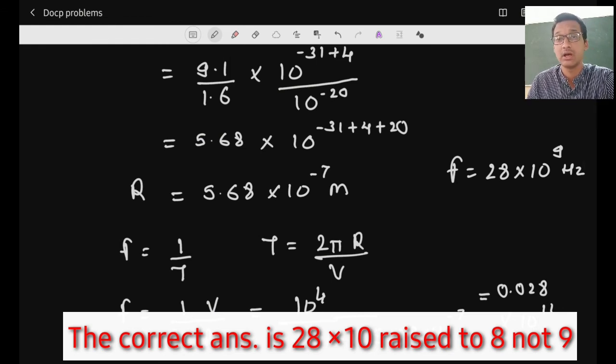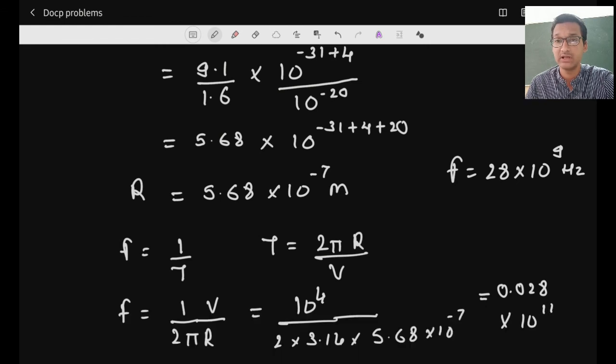So the frequency is 28 × 10⁹ Hz — a very high frequency. These are some of the problems regarding electric field and magnetic field. Thank you.